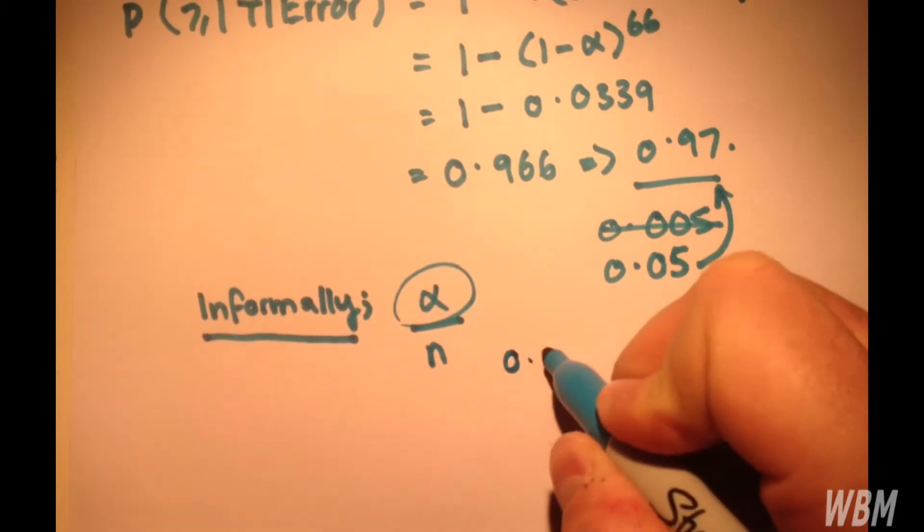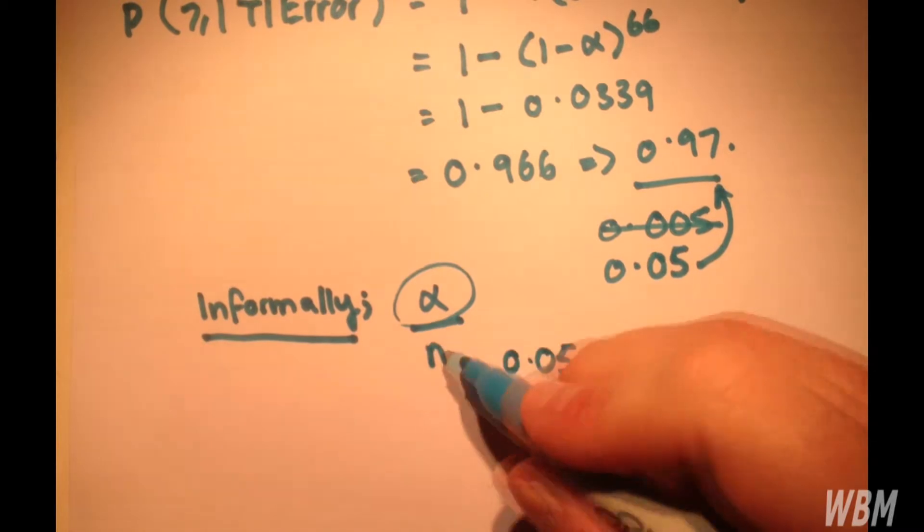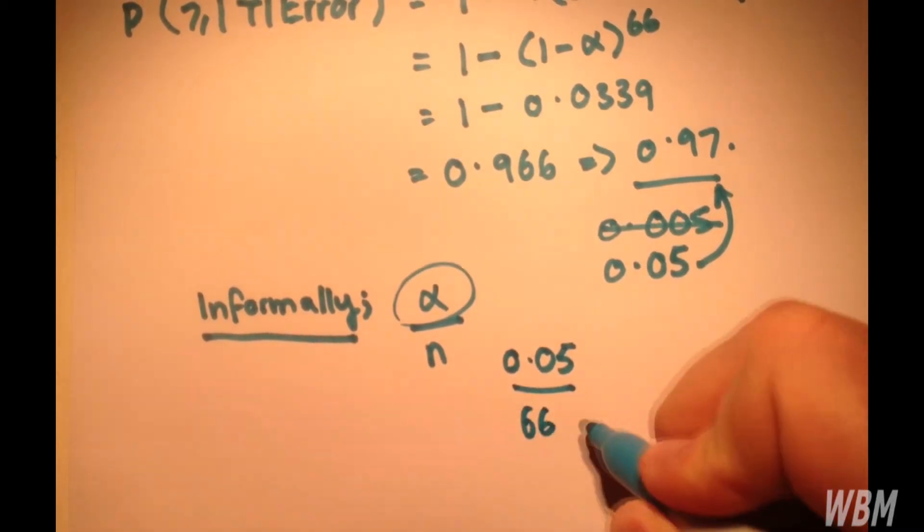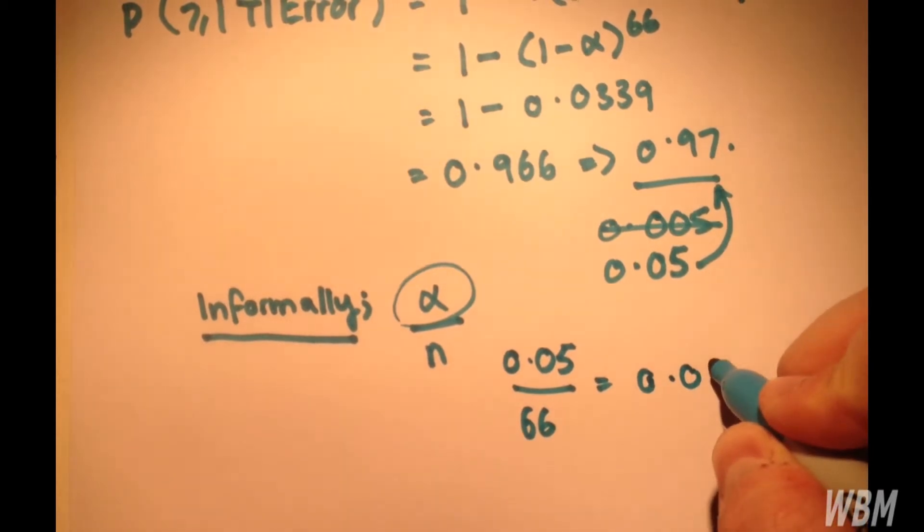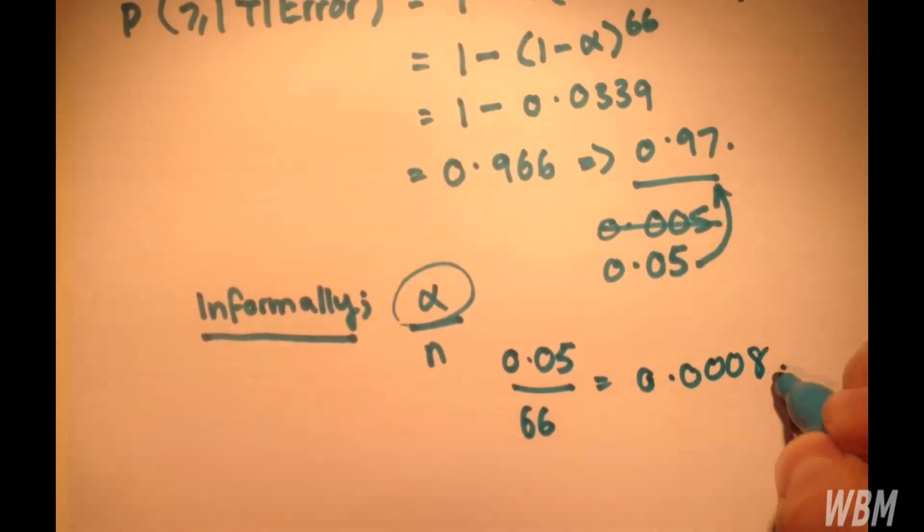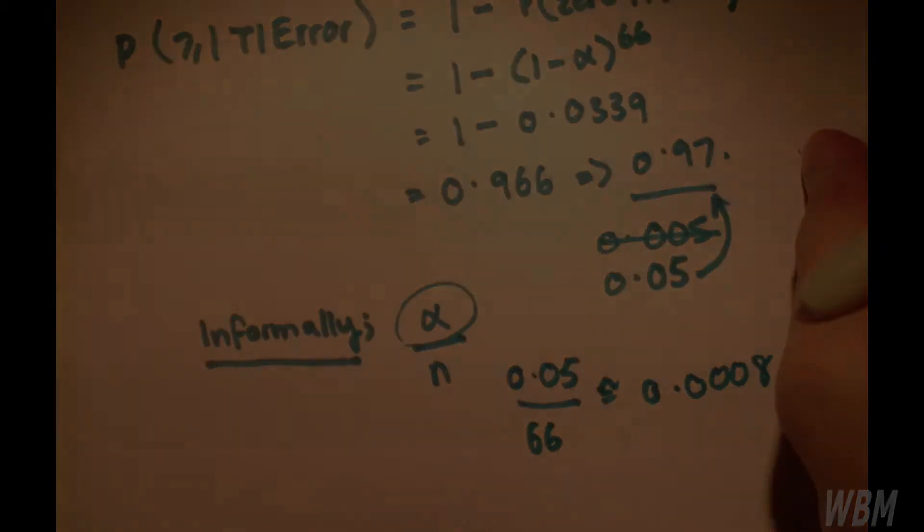So, this would be, normally alpha significance level is 0.05, so if we're doing 66, 0.05 over 66, which gives something like 0.0008, or something, roughly. So, let's have a look at the formal description.